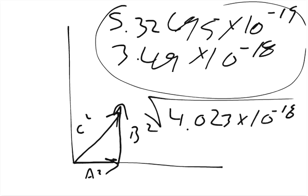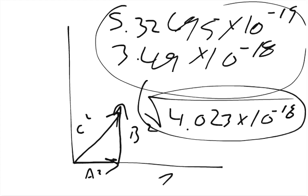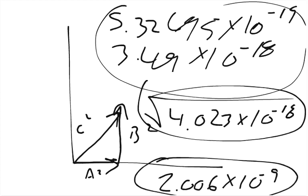When you add them together, you get 4.023 times 10 to the negative 18th. Now you've got to find the square root of this, because this is c squared, so to find c we find the square root. And the square root is 2.006 times 10 to the negative 9th. This is the magnitude of the resultant force.